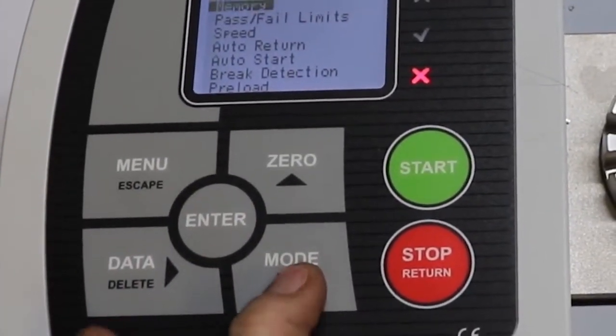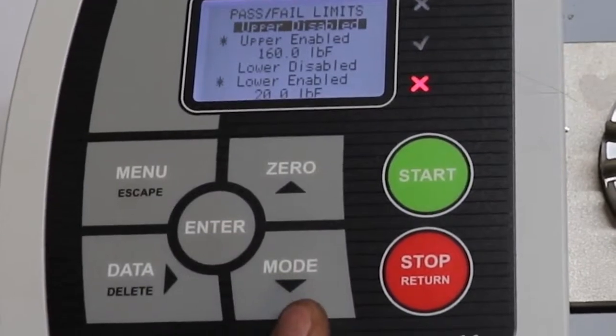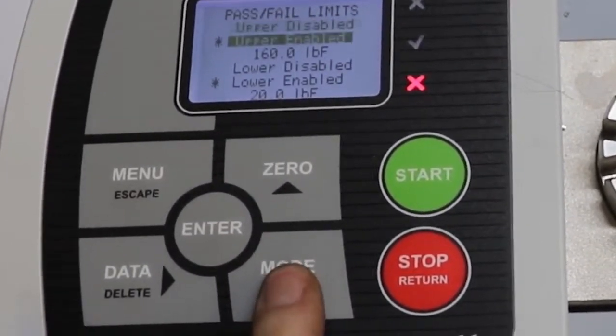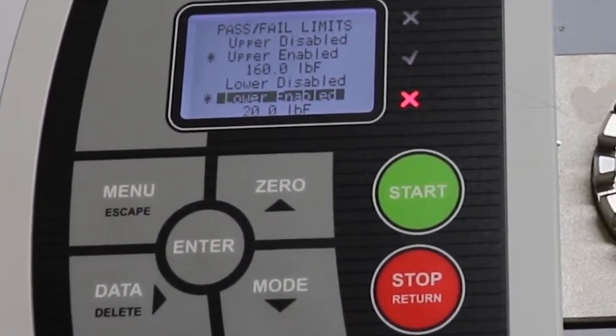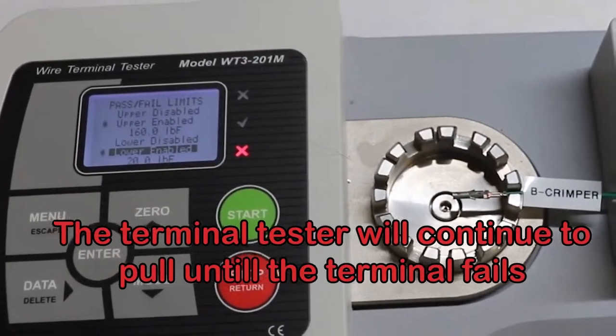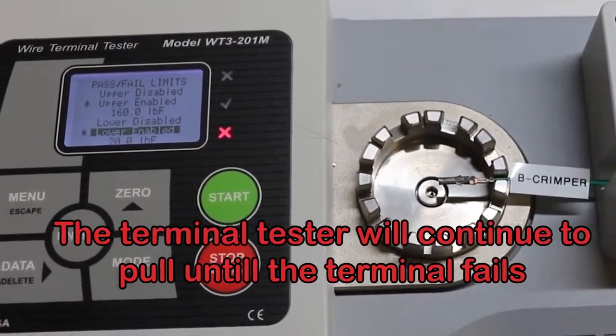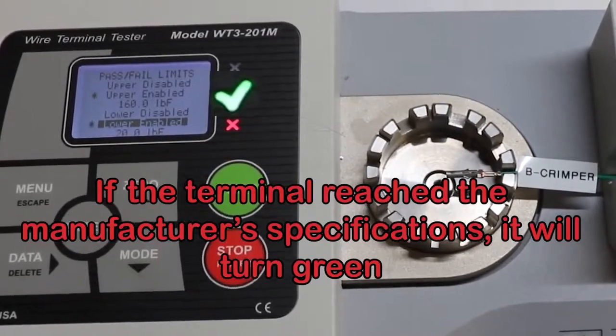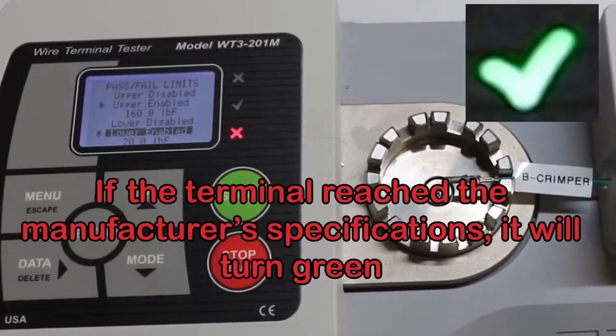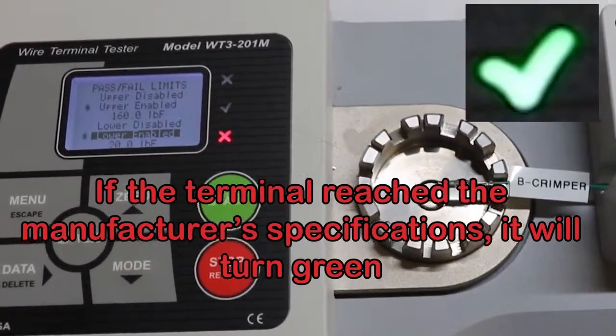Go down to pass and fail limits. Okay. We want to go down to lower enabled. Okay, and where are you getting this lower enabled number from? You'll go directly from the manufacturer, who will have a specific pull force that they want you to test and pass. Okay, so we do have a pass fail limit and that's provided by the manufacturer. Yes, yes it is.